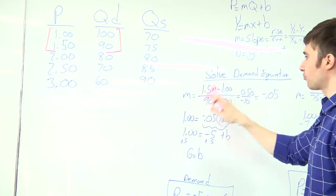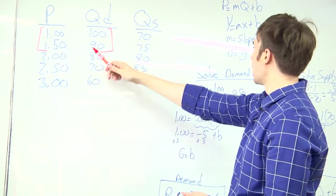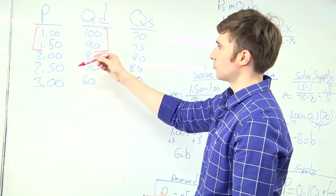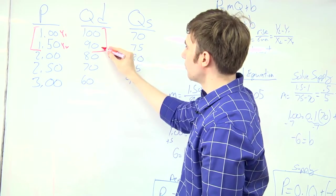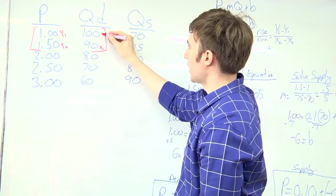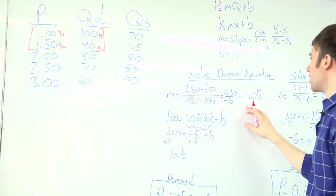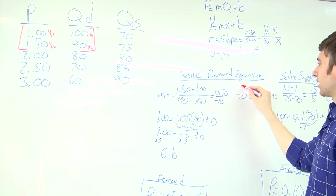So when I solve for my demand equation, I'll plug that in. This is my y2 minus y1, and this will be my x2 minus x1. So here is my answer for slope.